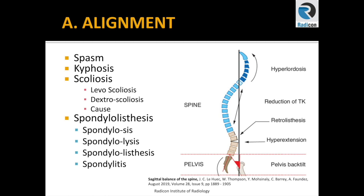Finally, we come to spondylolisthesis, which is forward slip or anterolisthesis. We have to differentiate it from four related entities: spondylolysis, spondylosis, spondylolisthesis, and spondylitis. Spondylosis refers to degenerative changes in the spine. Spondylolysis is a break of the posterior elements, specifically pars defects. Spondylolisthesis is the forward slip of the lumbar vertebrae. And spondylitis is infection or inflammation.